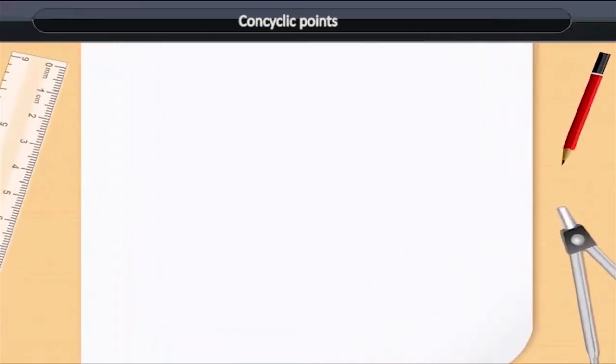Concyclic Points. Take a line segment PQ and two points R and S on the same side of the line. Now, join R with P and Q and S with P and Q.